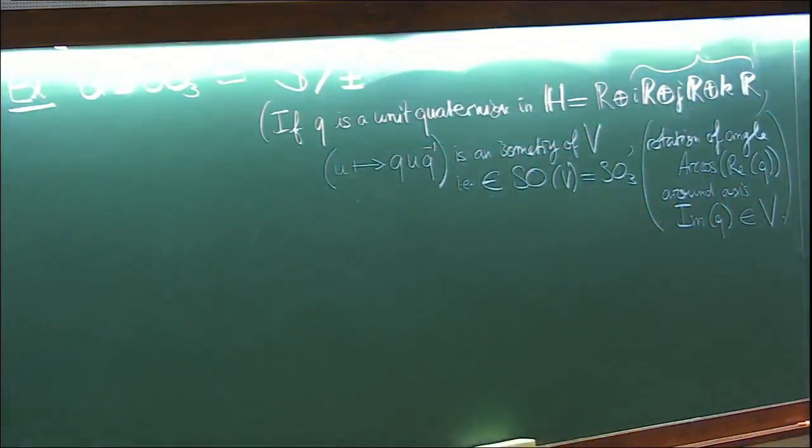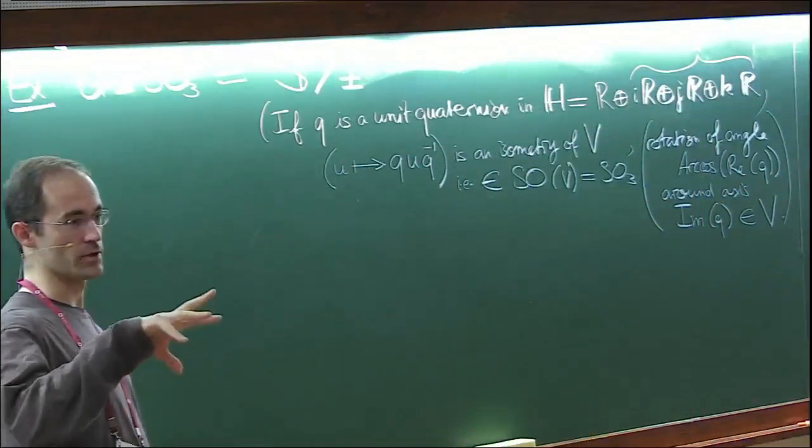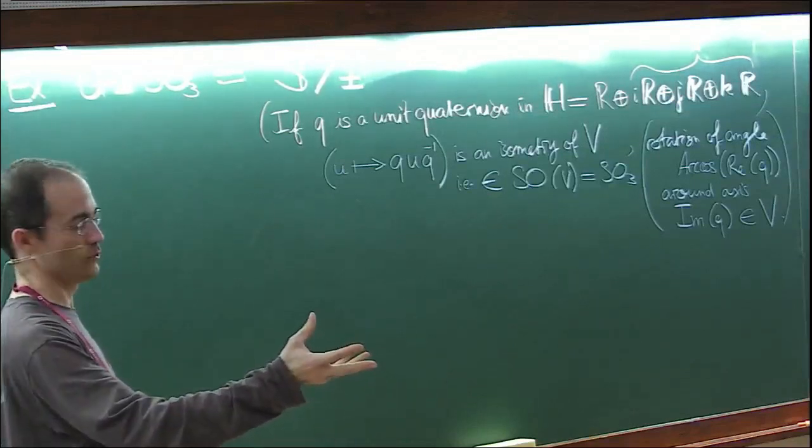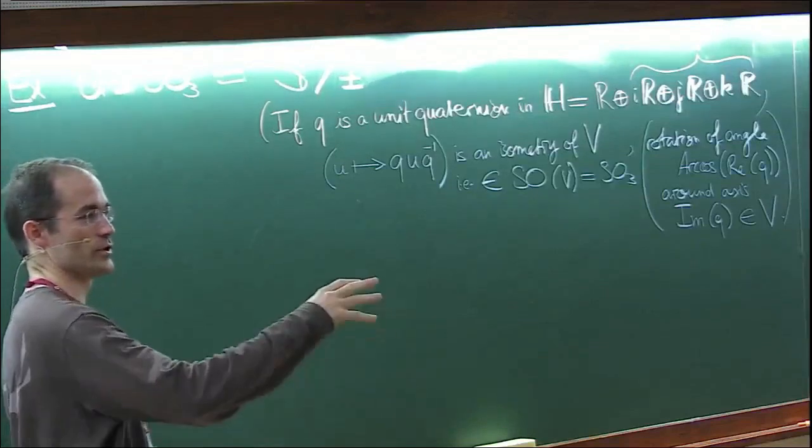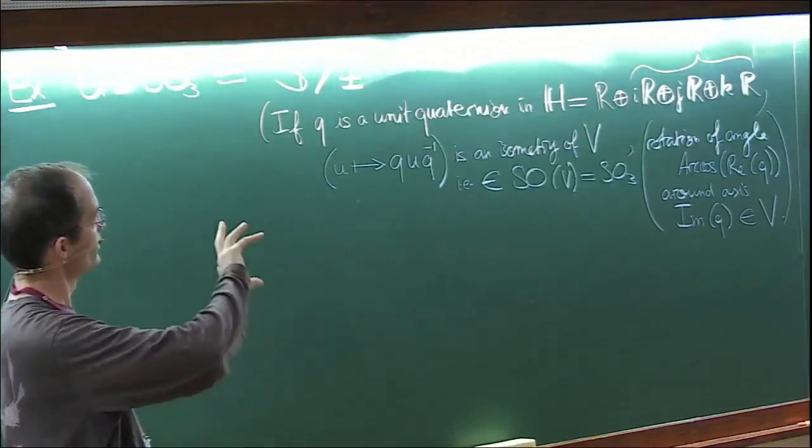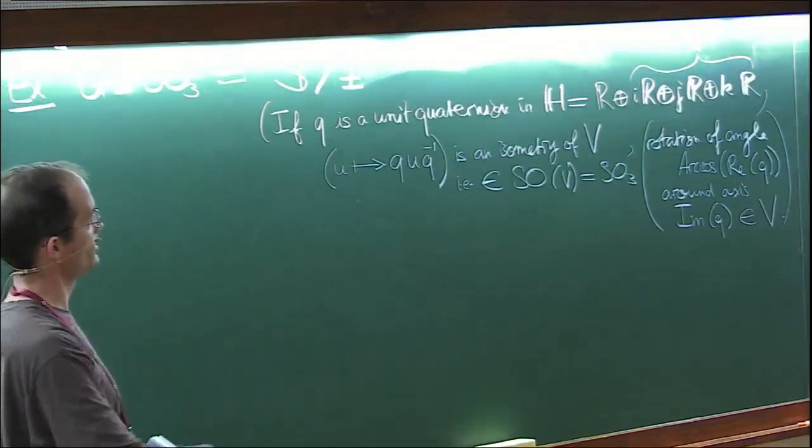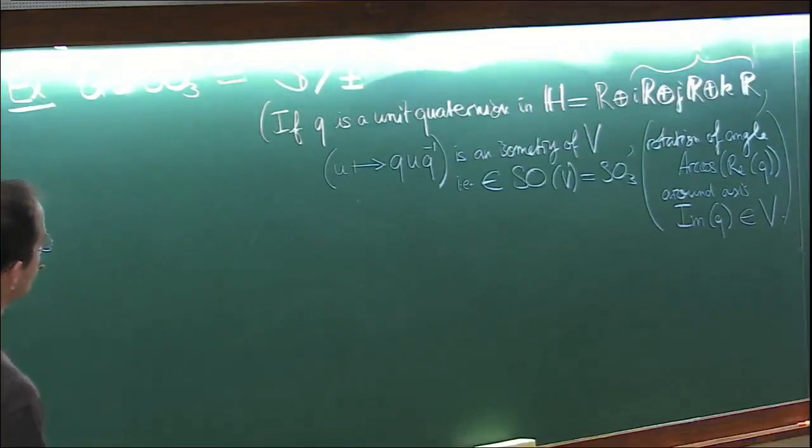It's a rotation of angle arc cosine of real part of Q around axis imaginary part of Q, which is a vector in V. That's a familiar way of realizing rotations in three-space. In fact, it's very useful computationally. In the industry, there are robots that are controlled by quaternions - whenever you have a robot, you have to compose the motions of the various joints, and a very computationally efficient way of doing this is to multiply matrices in SO(3) as quaternions.